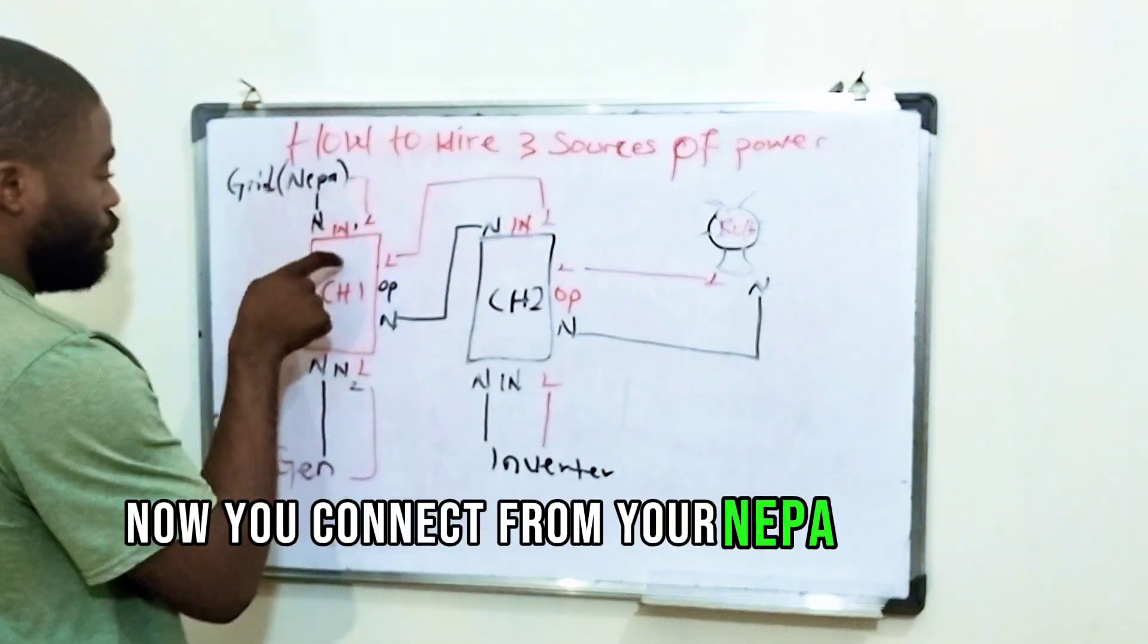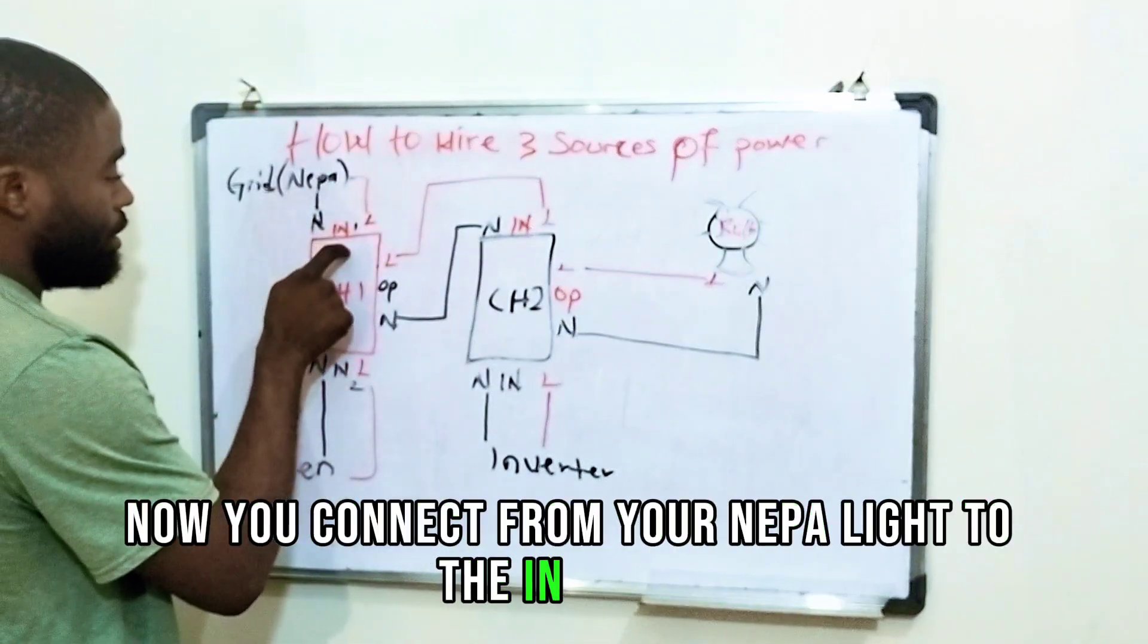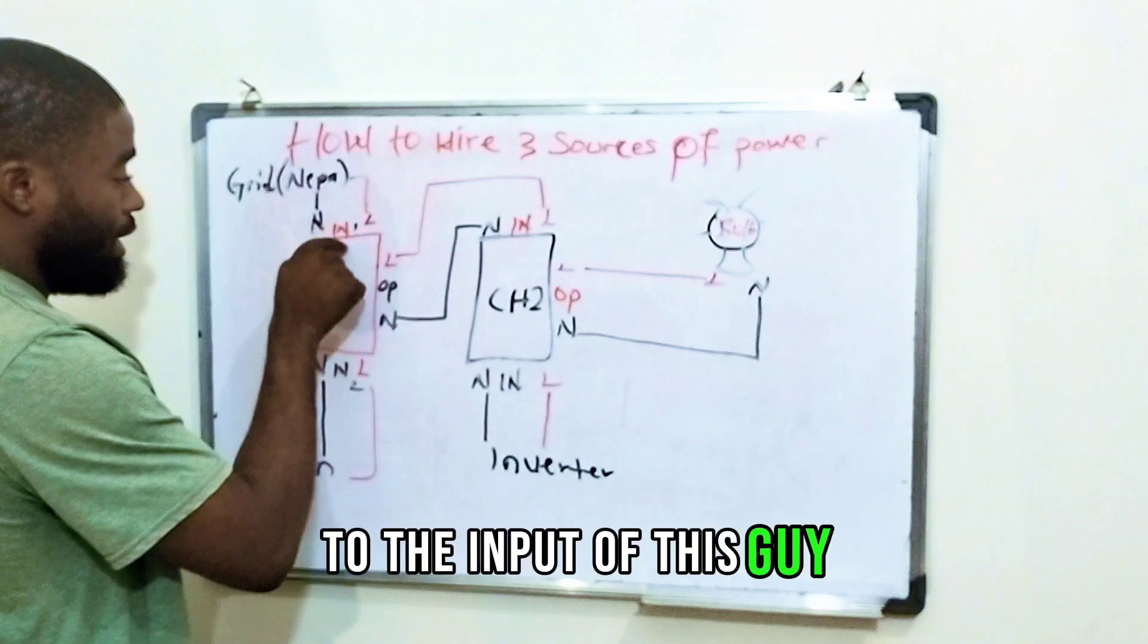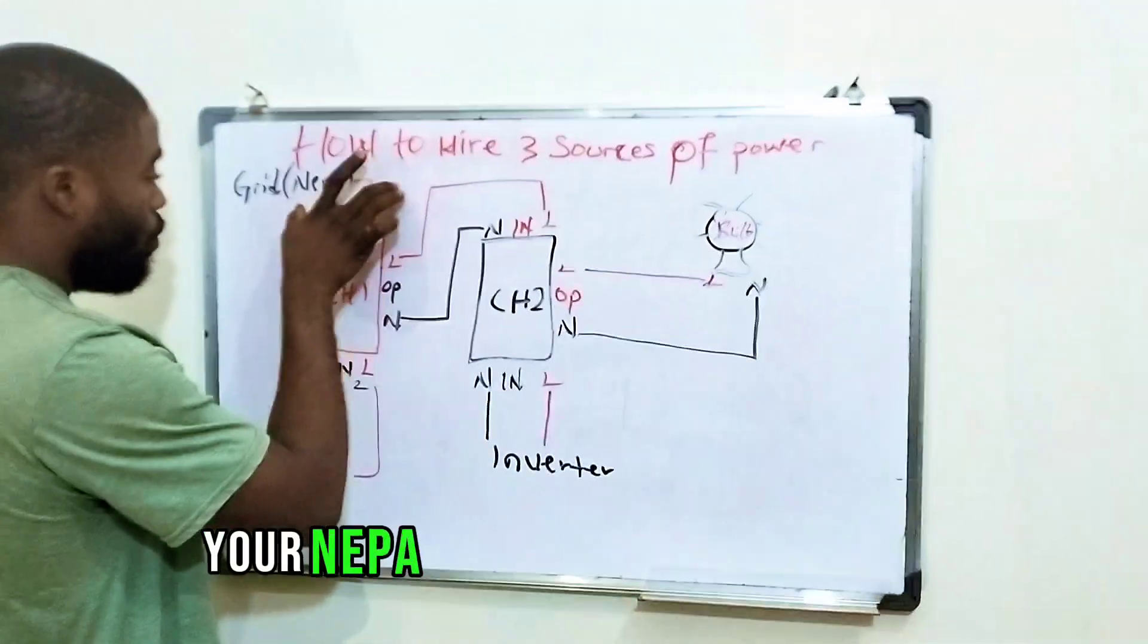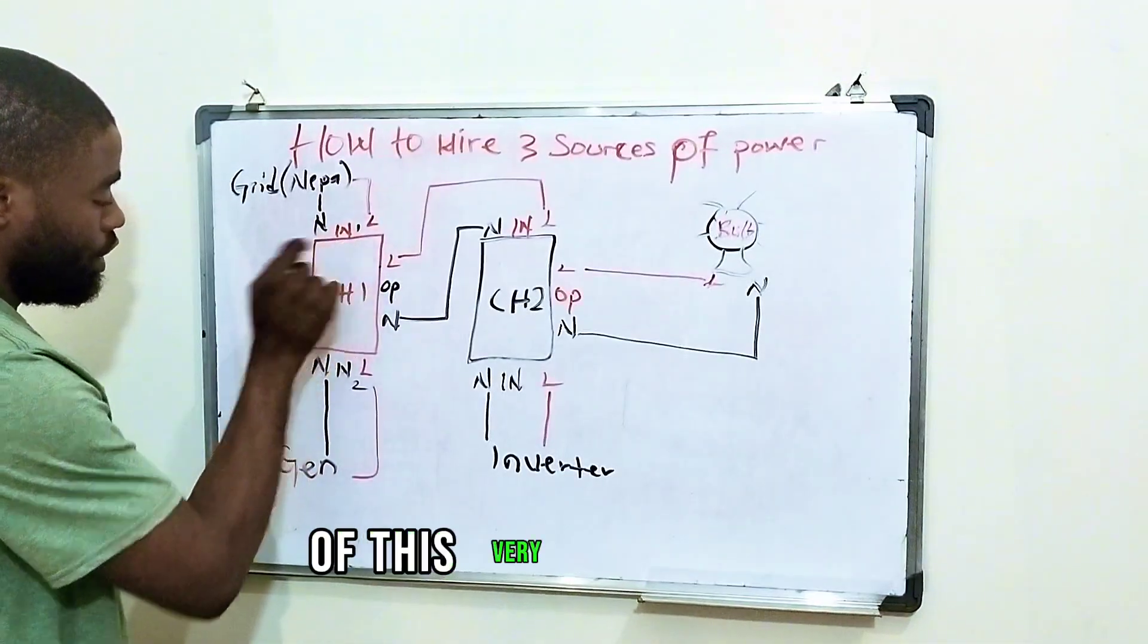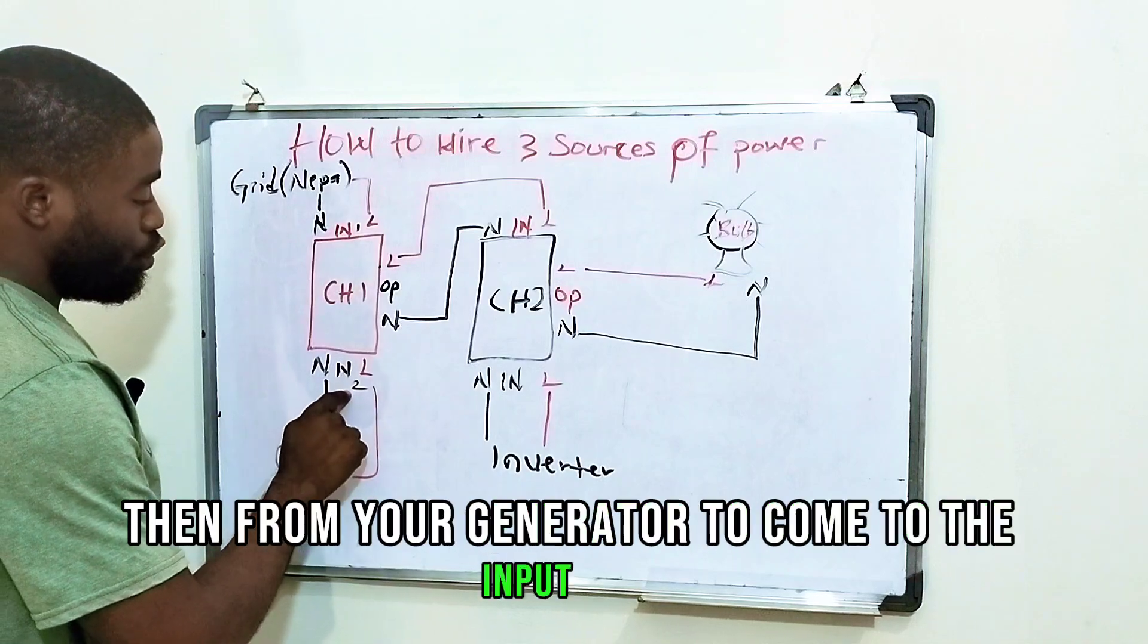Let's assume this is a hundred amp changeover. Now you connect from your NEPA light to the input of this one, let's say input one. So your NEPA will come to the input one of this very changeover. Then from your generator it will come to the input two.